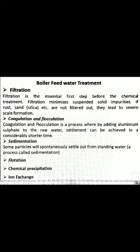The second process is coagulation and flocculation. Coagulation and flocculation is a process whereby adding aluminum sulfate to the raw water, settlement can be achieved in a considerably shorter time. Certain chemicals are added to raw water to remove impurities. While some particles will spontaneously settle out from water on standing — this is called sedimentation — others will not. To cause particles that are slow to settle to settle out more readily, a soluble chemical or mixture of chemicals is added to the water. Such a chemical is called a coagulant and the process is called coagulation.